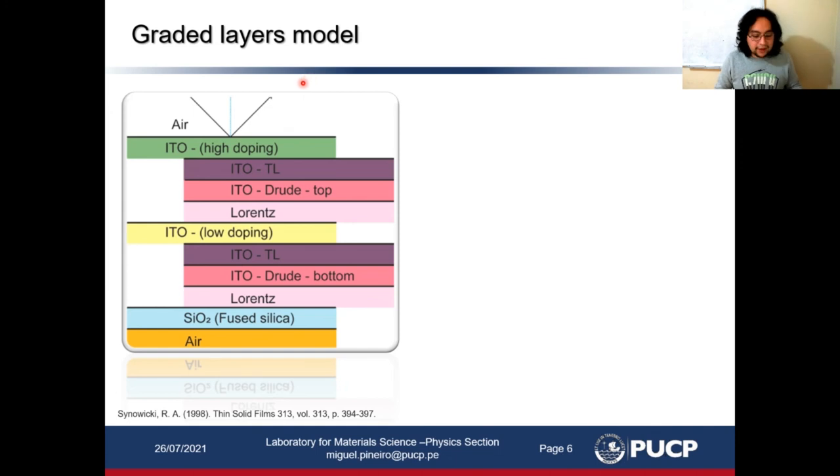These two layers are also known as the graded layer model. Typically, the dielectric function modeling of ITO is performed using the Drude model and Tauc-Lorentz model, considering only a single layer. But in this study we model it as two layers. Both layers share the same Tauc-Lorentz parameters but different Drude parameters in order to obtain different carrier density and mobility for each layer from transmittance measurements.